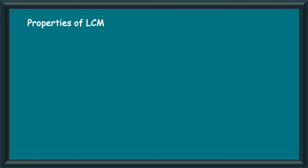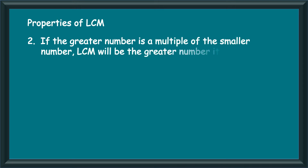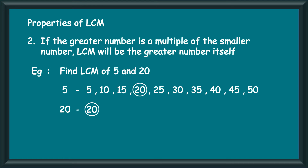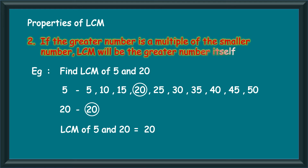The second property of LCM: if the greater number is a multiple of the smaller number, then the LCM will be the greater number itself. For example, find the LCM of 5 and 20. Using the listing method, we write the first few multiples of 5. Next, we write the multiples of 20. The smallest multiple of 20 is the number 20 itself, and 20 is the smallest common multiple of 5 and 20. Therefore, the LCM of 5 and 20 is the greater number 20. Hence, if the greater number is a multiple of the smaller number, then the LCM will be the greater number itself. Another example: the LCM of 9 and 63 will be 63 itself, since 63 is a multiple of 9.